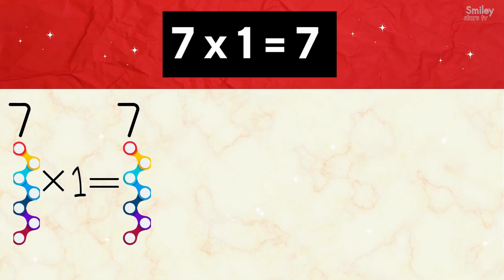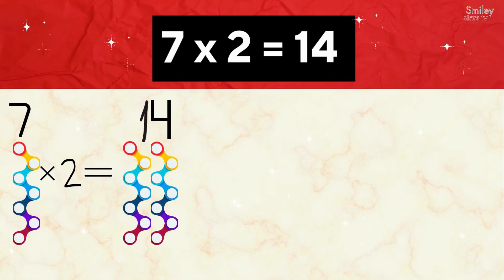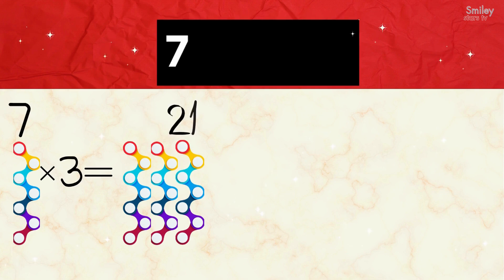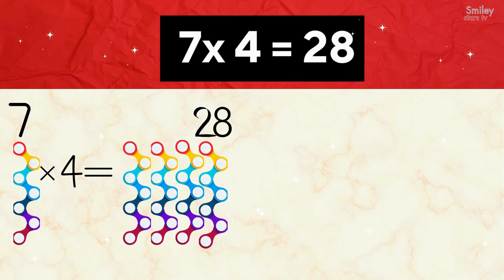Seven ones are seven, seven twos are fourteen, seven threes are twenty-one, seven fours are twenty-eight.